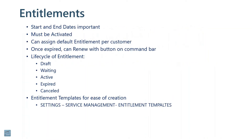A couple of important things: start and end dates are very important for these entitlements — think of it kind of like a support contract. They must be activated; when you create them they're in a draft mode. You can assign a default entitlement per customer. And once the entitlement expires, meaning the end date has been reached, there is a renew button on the top of the form to renew it.